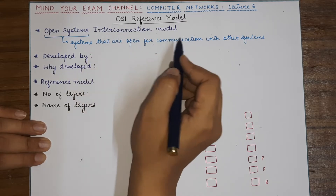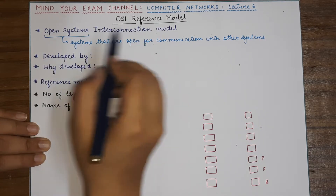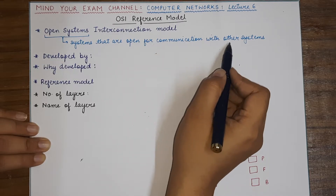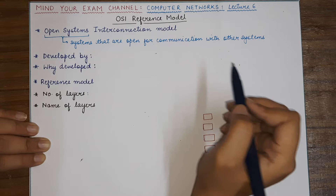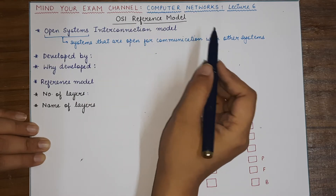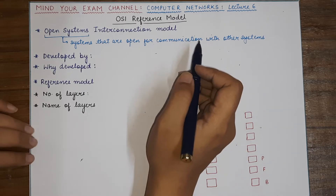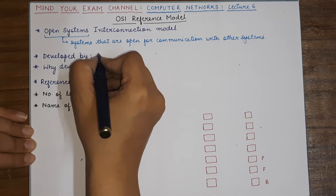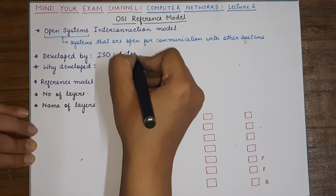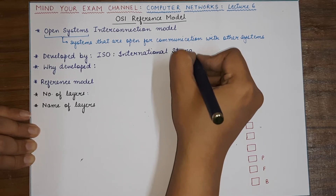We will study this model in today's lecture. OSI stands for Open Systems Interconnection, where 'open system' means the machines and hosts that are open for communication with other systems. All those machines present in a network that want to communicate must follow the OSI reference model. This model was developed by ISO, which is the International Standards Organization — an important name to remember for your exam.